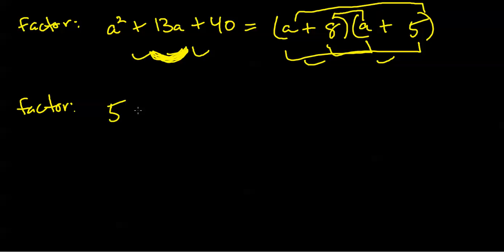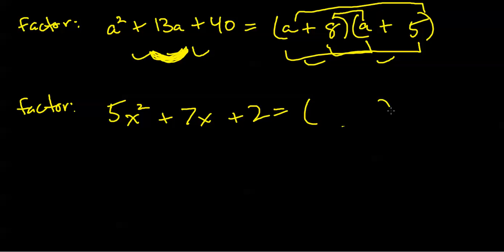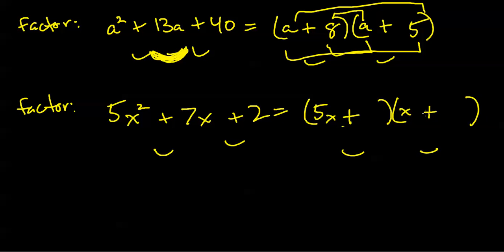We won't always be so fortunate as to have the lead coefficient being a 1, and that does complicate things. Let's try: factor 5x squared plus 7x plus 2. Since 5 is not 1, I'm going to have a 5x and an x in my first slots. If this sign is positive, these signs both have to be the same. If this sign is also positive, both must be positive. I need factors of 2 in the last slots — either 1 and 2 or 2 and 1. I think the second layout works: outer product is 5x, inner product is 2x, and that adds up to 7x.